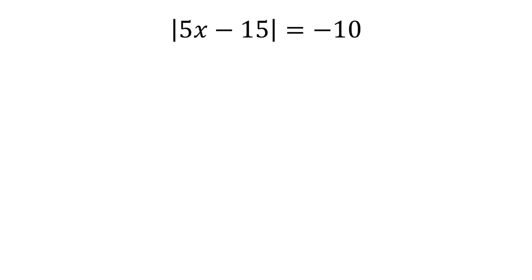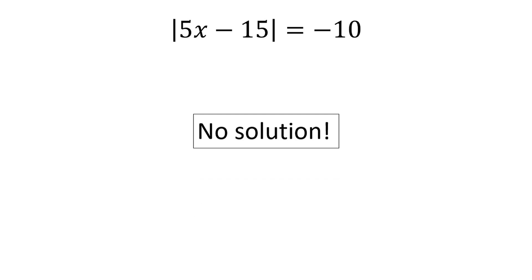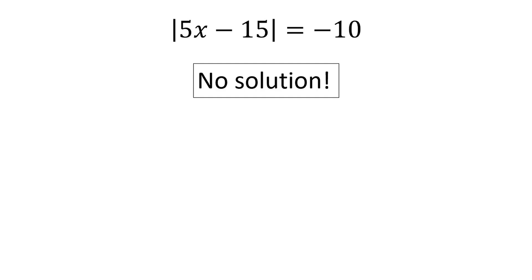it is impossible for the absolute value of a number to be negative. Therefore, the absolute value of 5x minus 15 will never equal negative 10, and therefore there is no solution to this problem. There will always be no solution whenever the equation states that the absolute value of some quantity is negative. Absolute value cannot be negative.